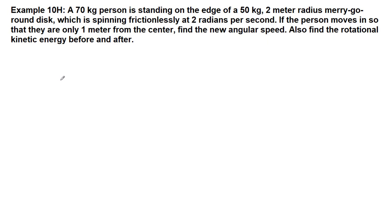This example has a person standing on a merry-go-round, a kind of flat disc like you might find at a playground. They start standing on the edge of the disc, and what they're going to do is move towards the center. After they use their muscles to get closer in, we want to figure out what the new angular speed is.